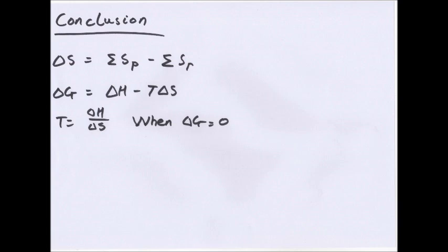So in conclusion, delta S, the entropy change, equals the sum of the entropy of the products minus the sum of the entropy of reactants. Delta G equals enthalpy minus temperature times entropy, and temperature equals enthalpy over entropy when delta G equals zero.